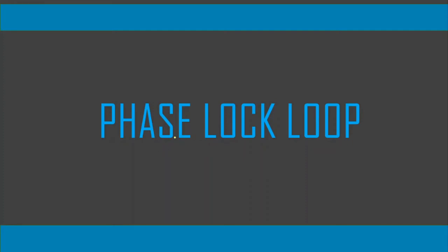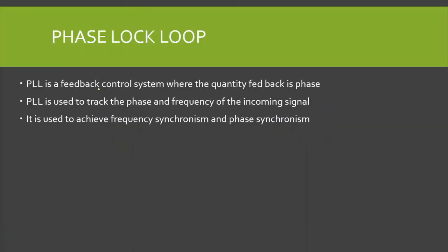Bismillahirrahmanirrahim. In this video we are going to discuss the demodulation of FM signal using the phase lock loop. The phase lock loop is a feedback control system where the quantity fed back is phase. This PLL is used to track the phase and frequency of the incoming signal. In the case of FM signal demodulation, the incoming signal is going to be the frequency modulated signal. This phase lock loop is used to achieve frequency synchronism and phase synchronism.